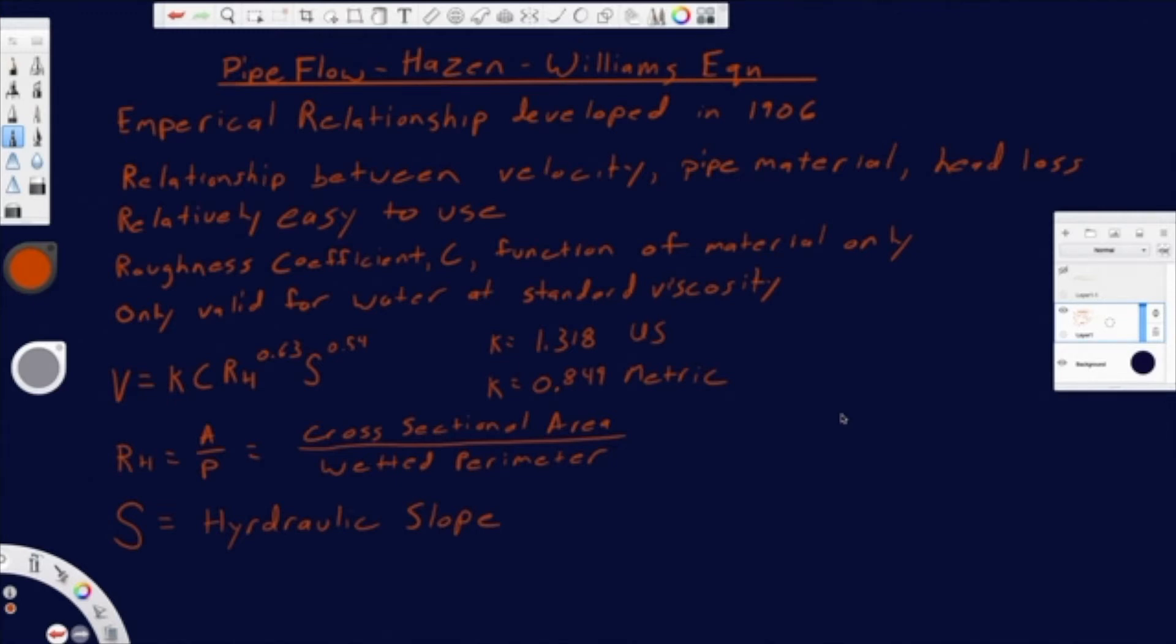Because then you get into fire suppression regulations there that you're not meeting. So you want to make sure that you're accounting for that, using a pipe diameter that's going to have a low enough velocity that you're not having too much head loss.